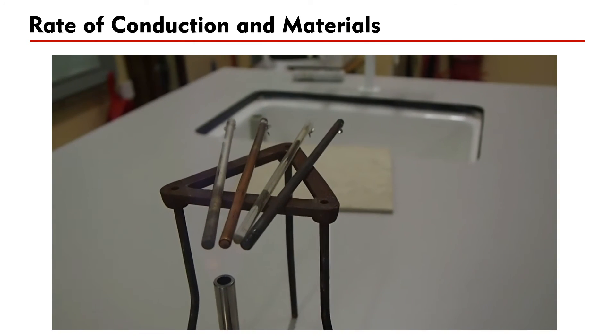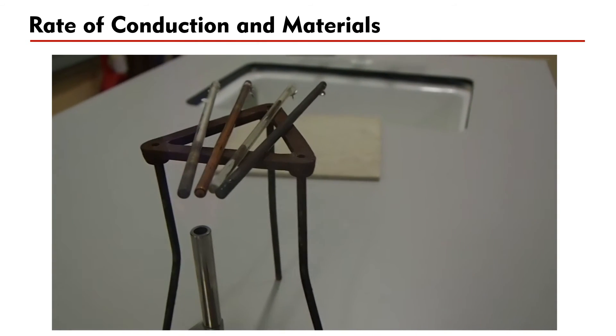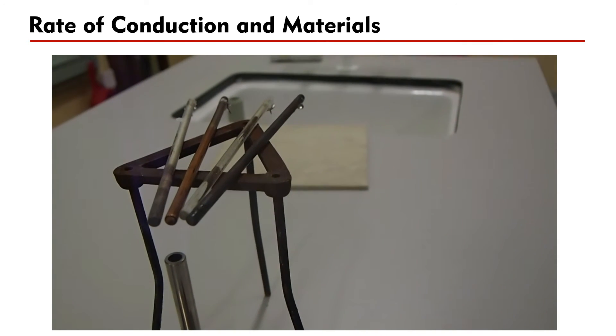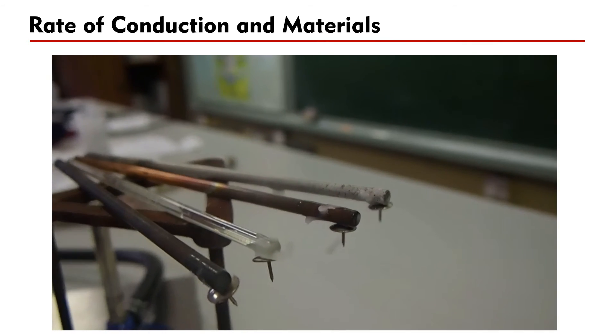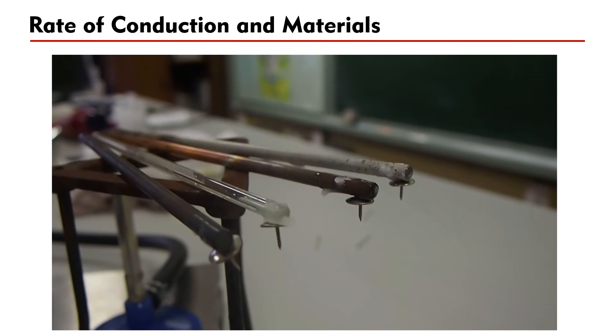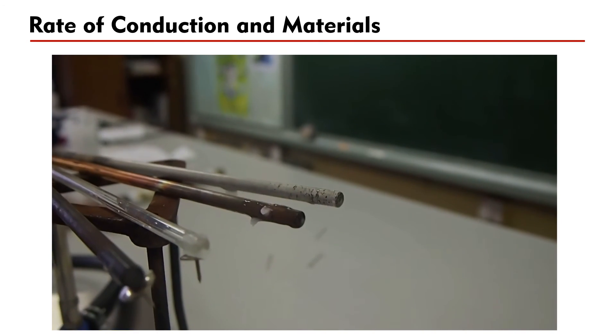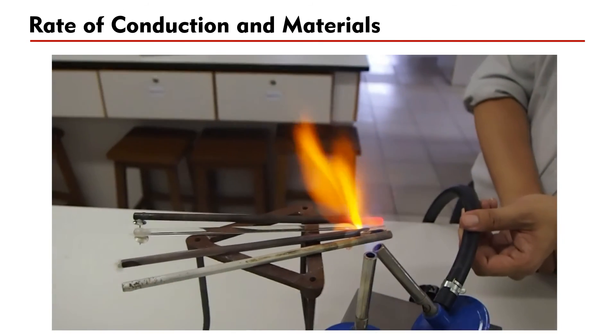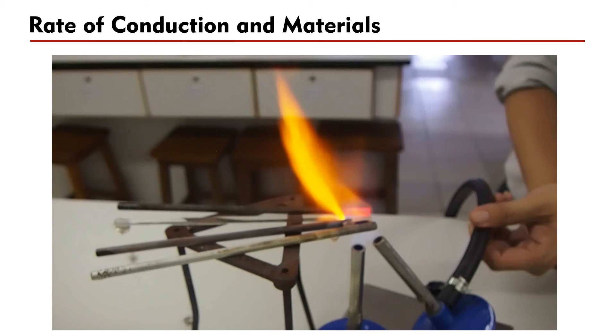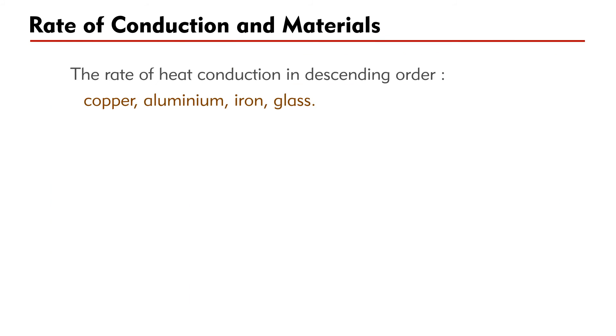Adhere a joint pin to one end of each rod by melted wax. A Bunsen burner is placed under the other ends of the rods. When heat is conducted to the far end, the wax will melt and the joint pins will fall. Results show that the rate of heat conduction in descending order of materials is copper, aluminum, iron, and glass.